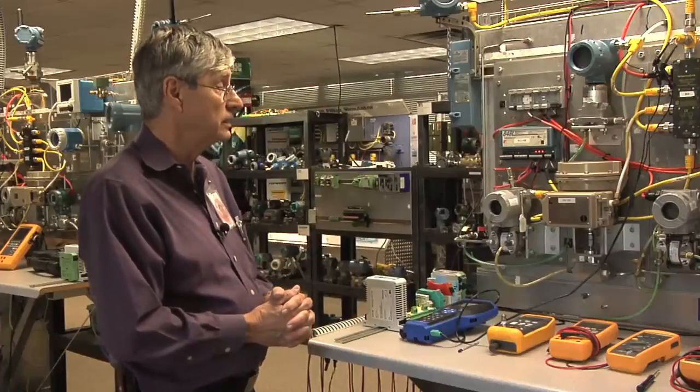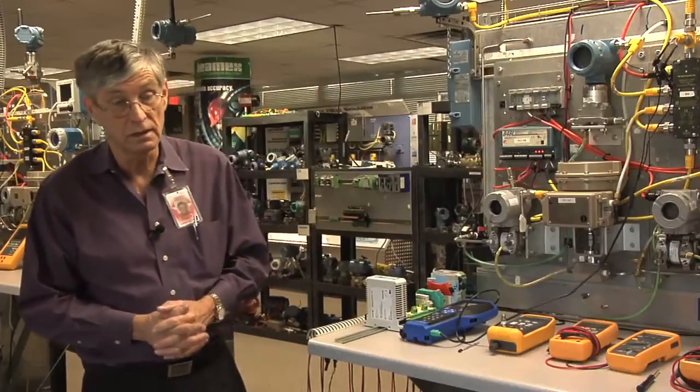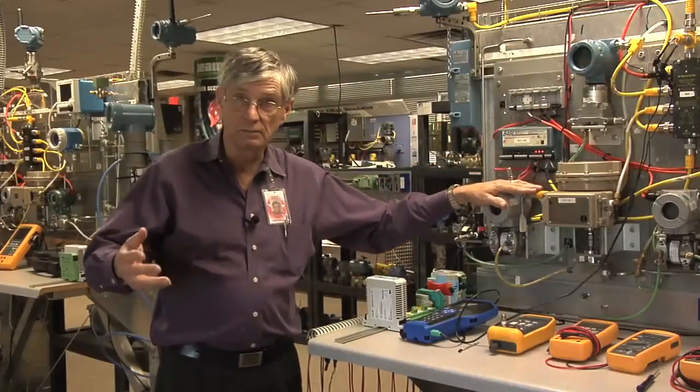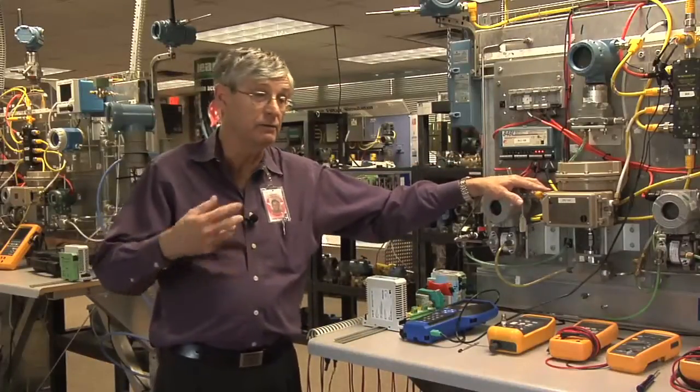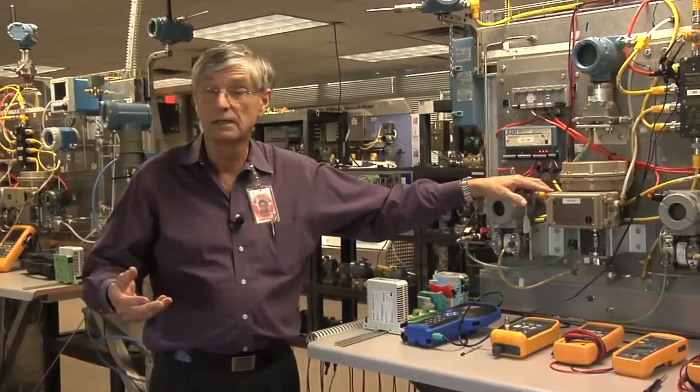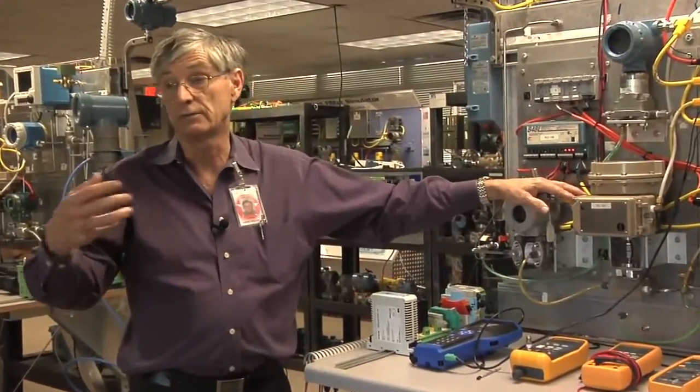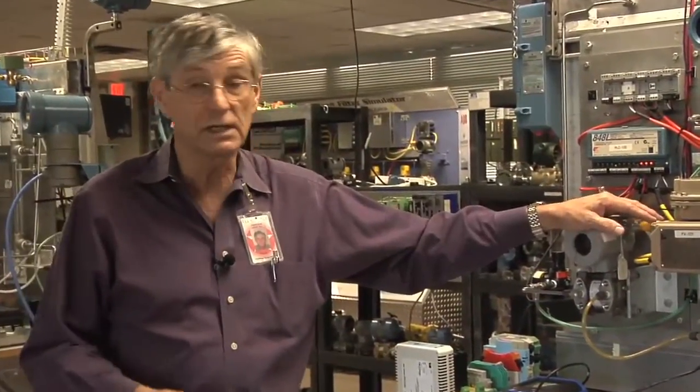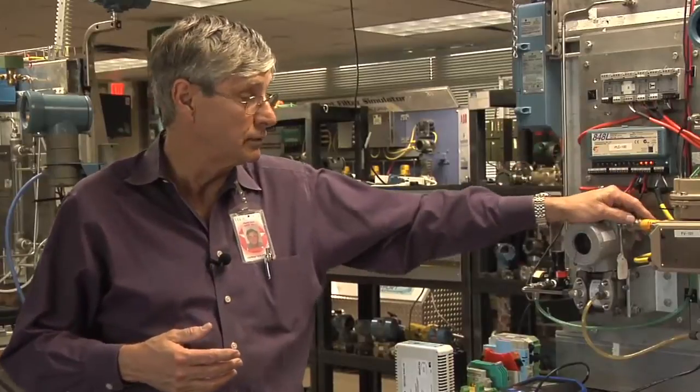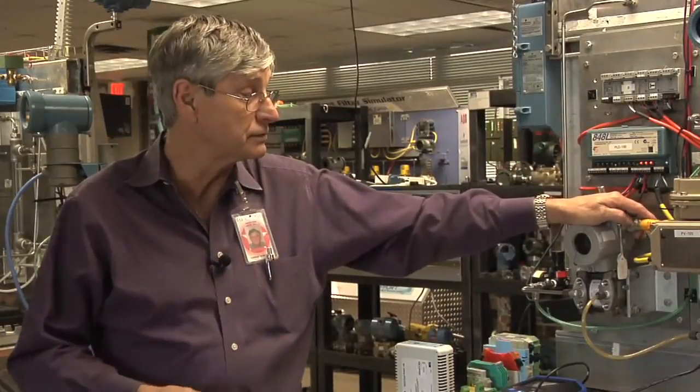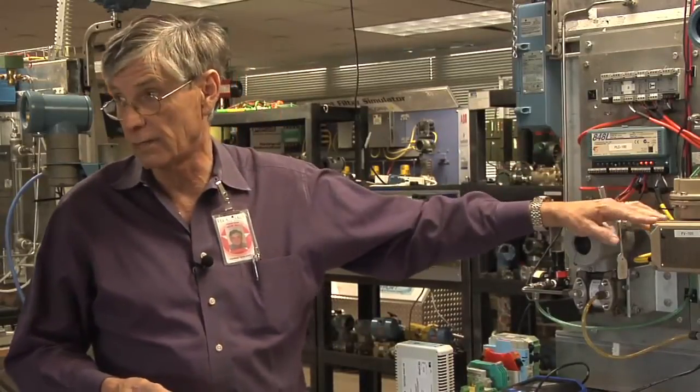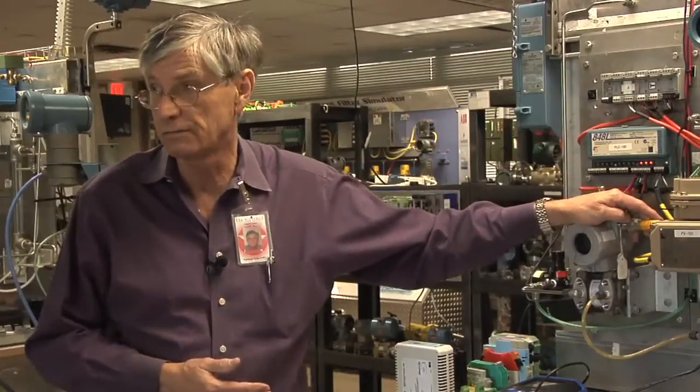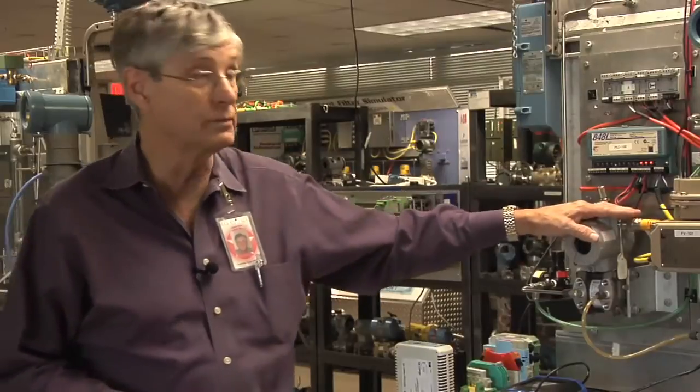And the last thing that we're going to demonstrate is what happens on failure of the measurement coming into the device. In most cases, in a plant, an individual operator would have to recognize that and in some cases may have to go and remove the controller from automatic and place it to manual. In this case, we'll demonstrate that when we remove the device, the measurement device from the system, that the valve will automatically shed itself to manual. That is an out-of-the-box feature with field bus devices and field bus control.